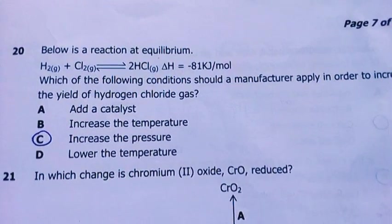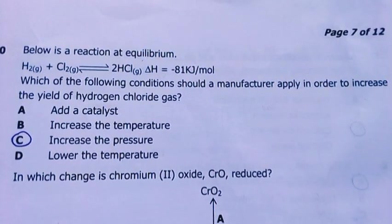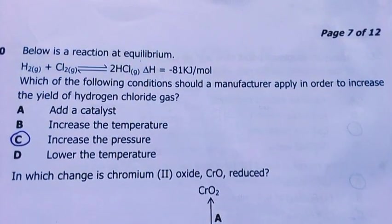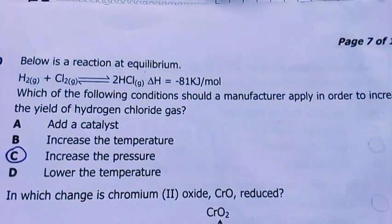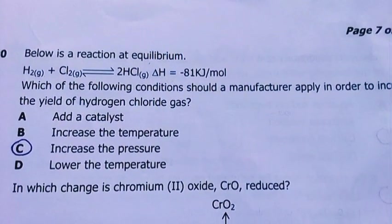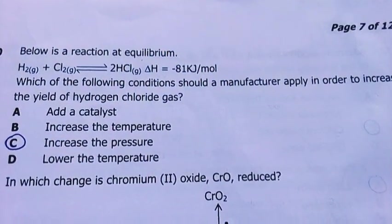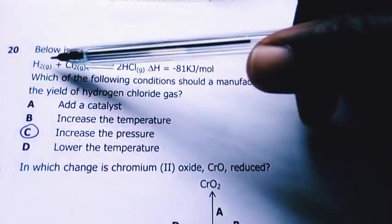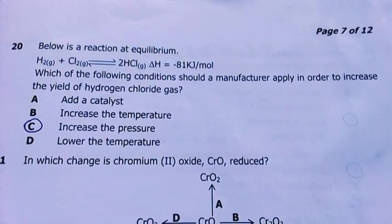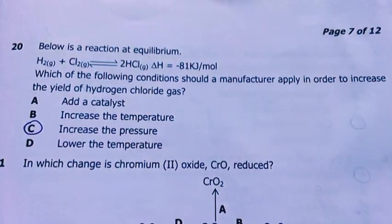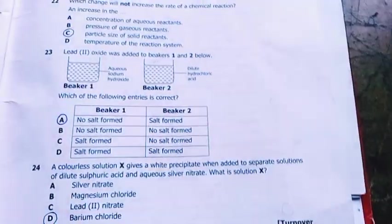Our last question for this part: below the reaction at equilibrium, which of the following conditions should a manufacturer apply to increase the yield of hydrogen chloride gas? Increase pressure, because pressure is the factor which affects the rate of reaction of species in gaseous state. When you increase pressure, you actually increase the rate of reaction, the yield of this gas. I end here for this part. I'll do the next part of 21 to 40 in the next video. Bye-bye for now.